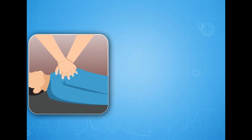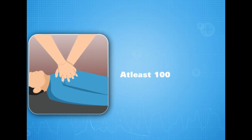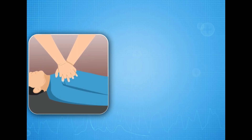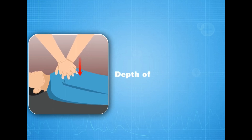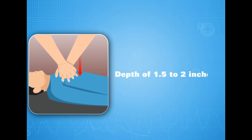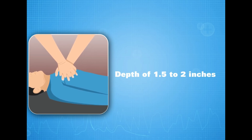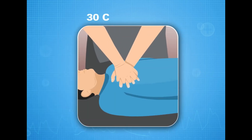Deliver 30 chest compressions at a rate of not less than 100 compressions per minute. Each compression should depress the chest 1.5 to 2 inches. After each compression, release the pressure completely, allowing the chest to recoil.